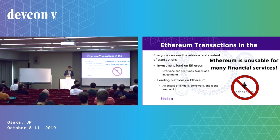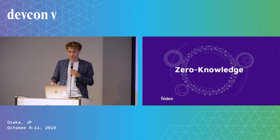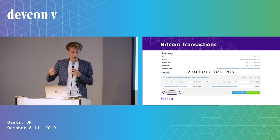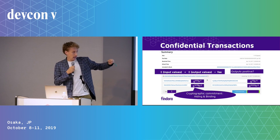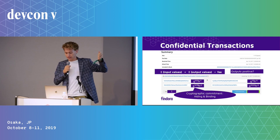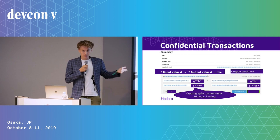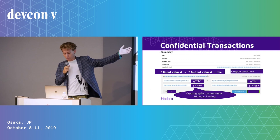Luckily, we sort of know how to solve those problems, and that is by using cryptography — especially something called zero knowledge. The idea is that instead of having a Bitcoin transaction that looks like this, I'm going to hide all of the amounts. I'll use something called a cryptographic commitment to hide all of these amounts, so no one can see what they are — they're basically encrypted. But then the question is: how do I check that the transaction is valid? How do I check that the sum of inputs equals the sum of outputs plus fees?